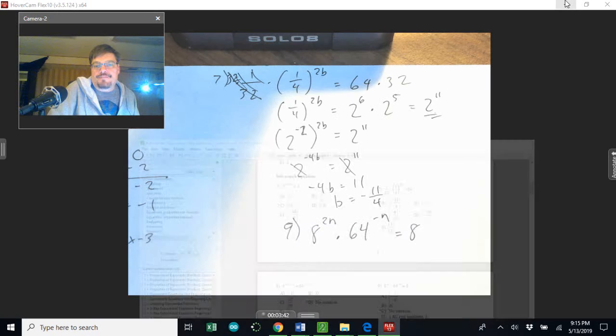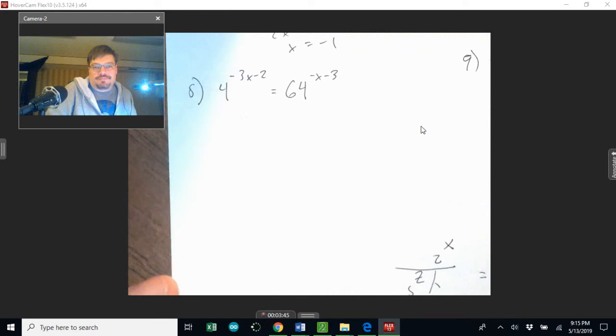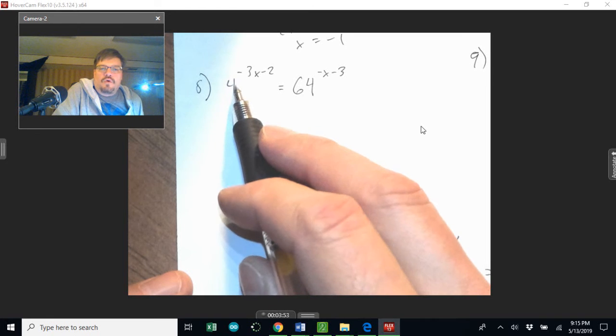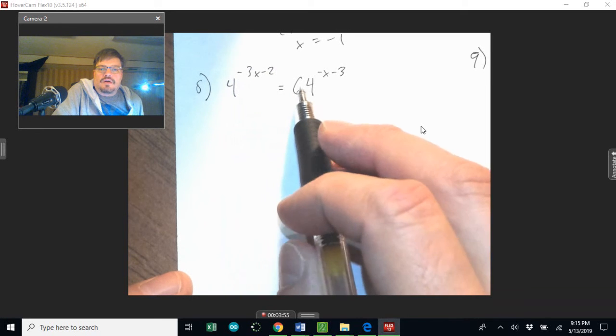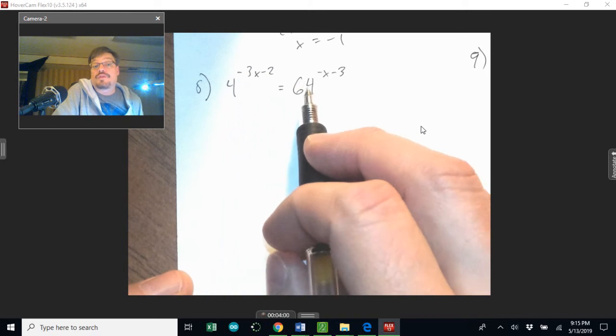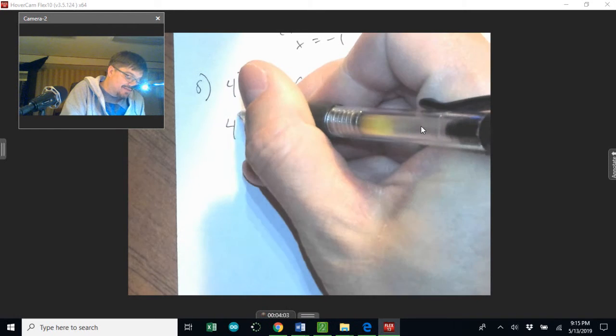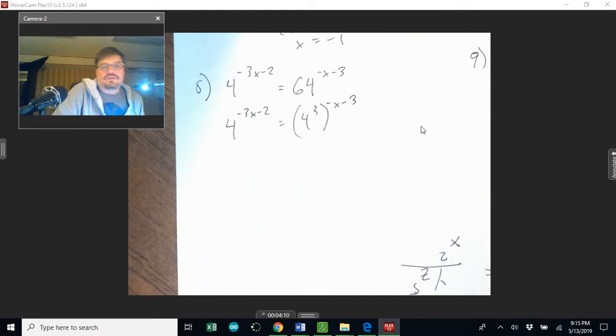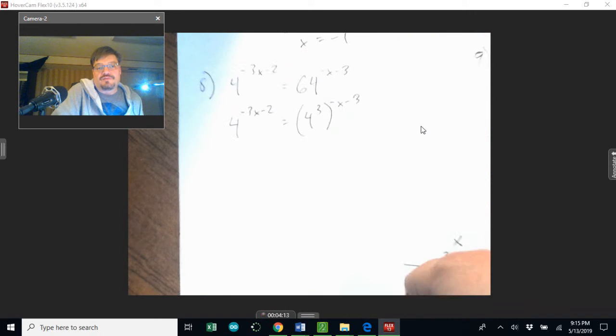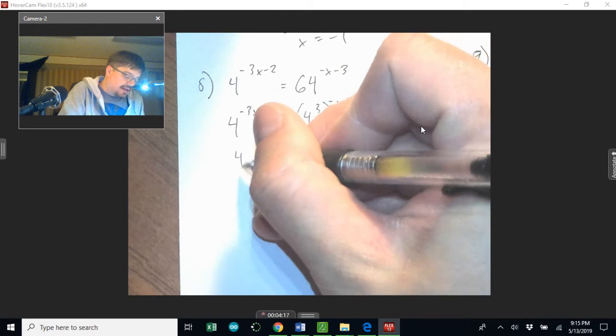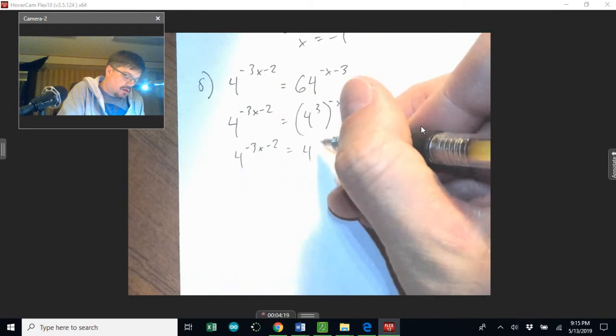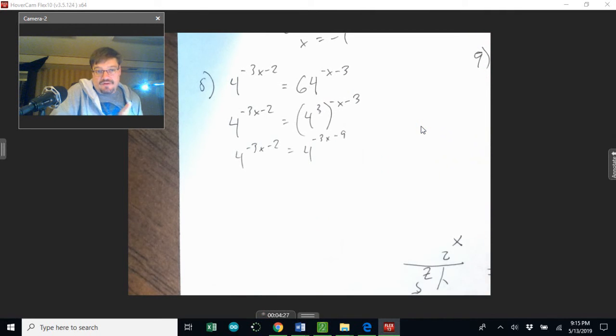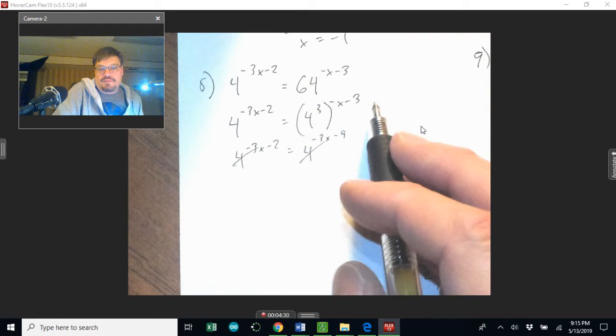Okay, now moving along. This is a little bit easier—this is probably something that you would see on the test. 4 to the negative 3x minus 2. 64 is actually a power of 4—it's 4 to the 3rd power. So we can leave this guy as he is and change 64 to 4 to the 3rd. 4 times 4 times 4 is 64. Now I can distribute—3 gets multiplied to here, 3 gets multiplied to there. This 3 gets distributed to both of them, and I get negative 3x minus 2 equals negative 3x minus 9.